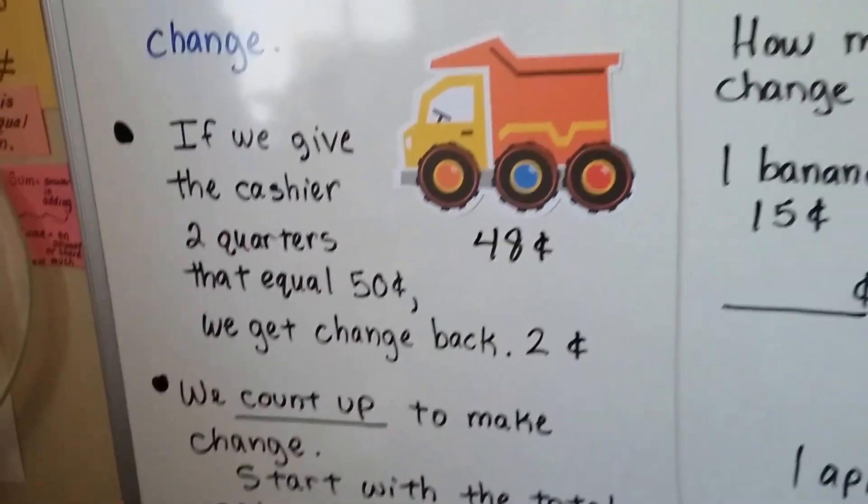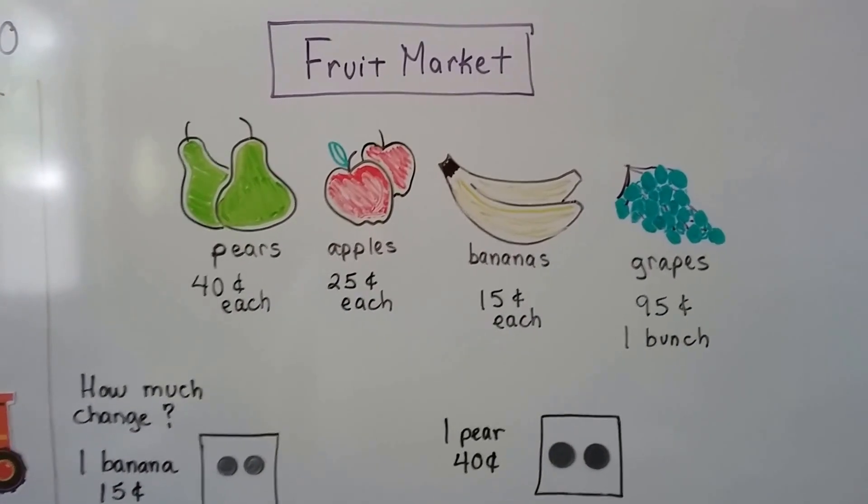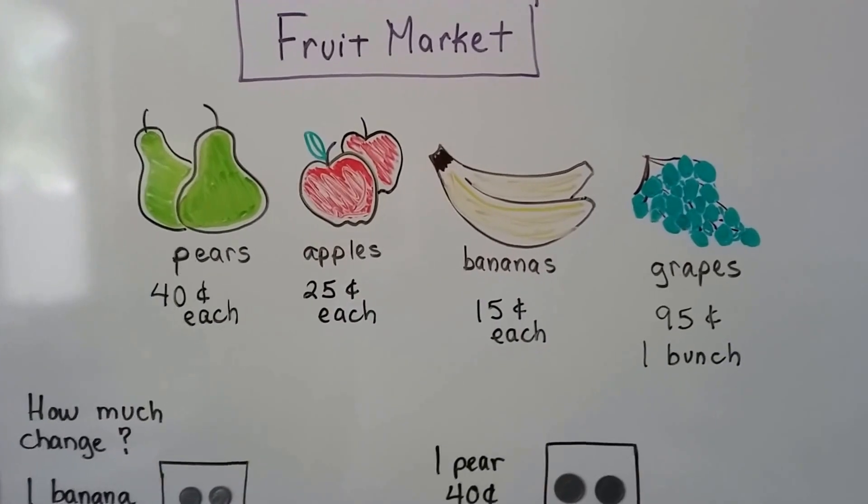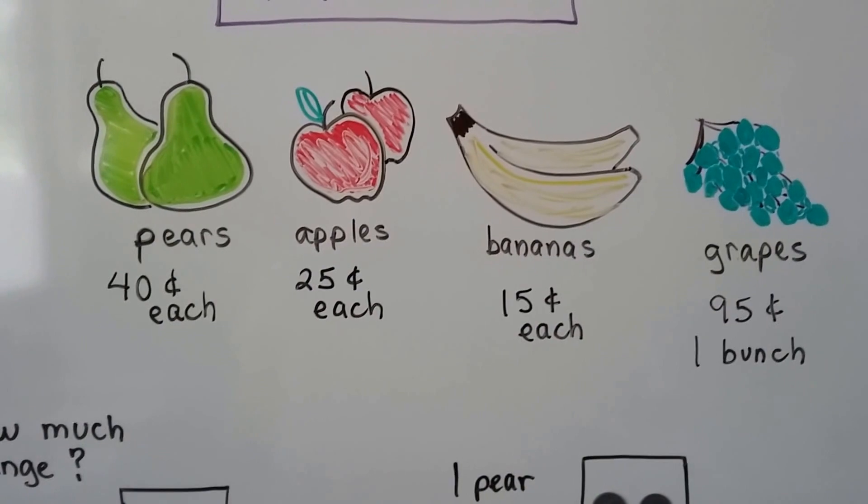So we're still at our fruit store here that we had in the last video. You can see pears are 40 cents each, apples are 25 cents each, bananas are 15 cents each, and grapes are 95 cents for one bunch.